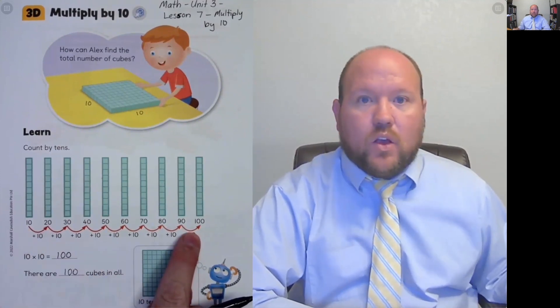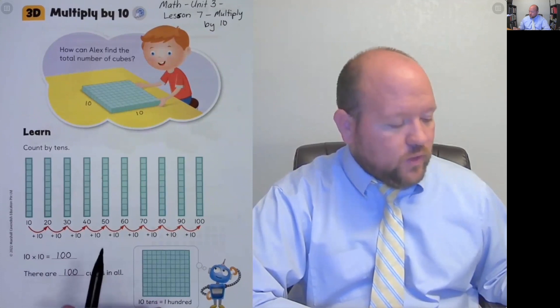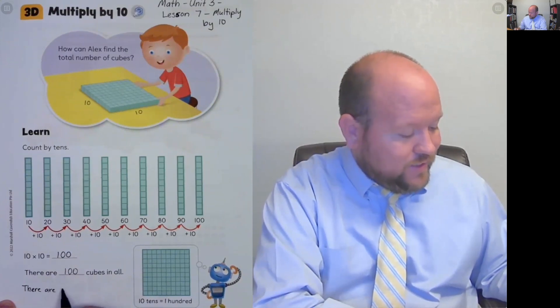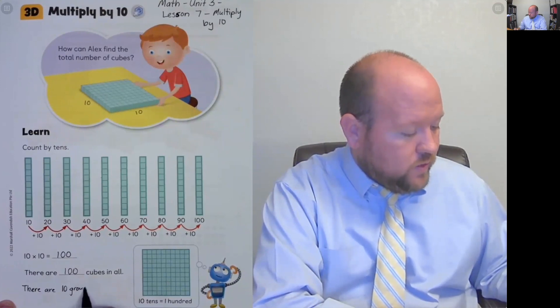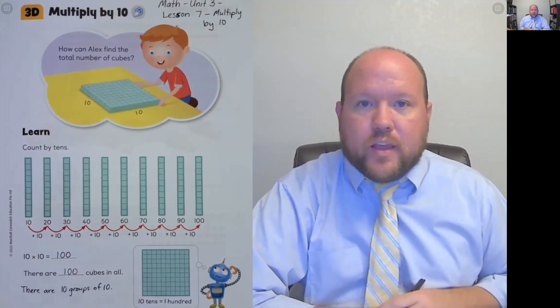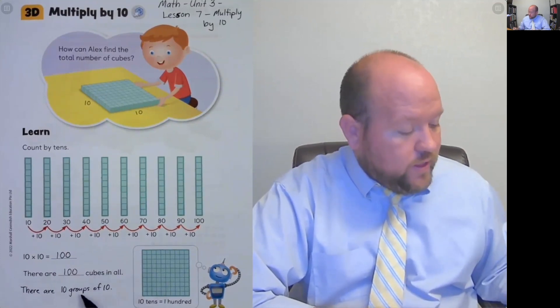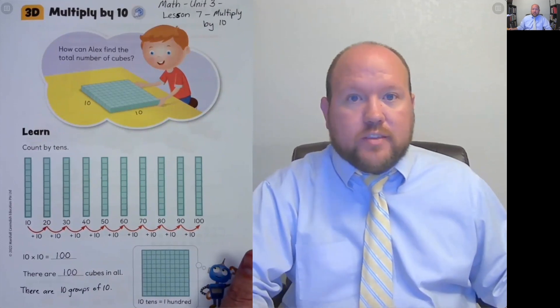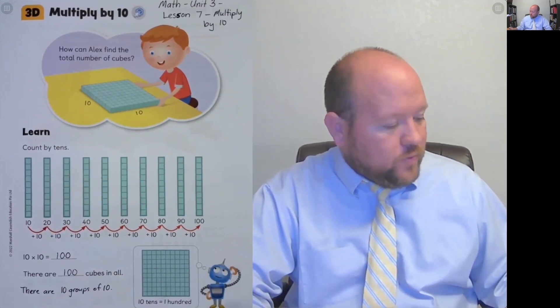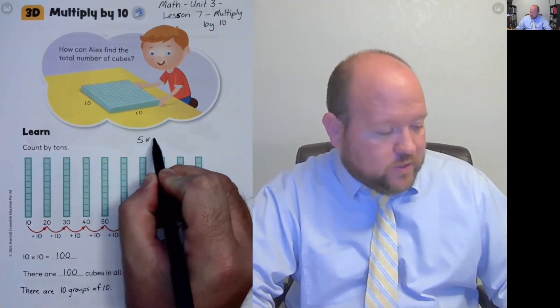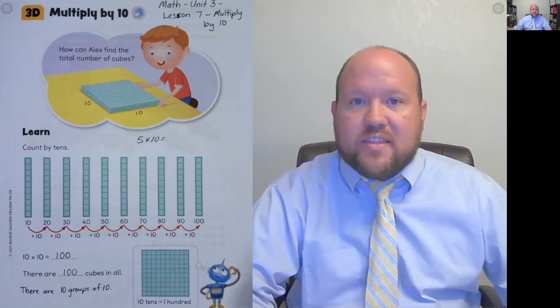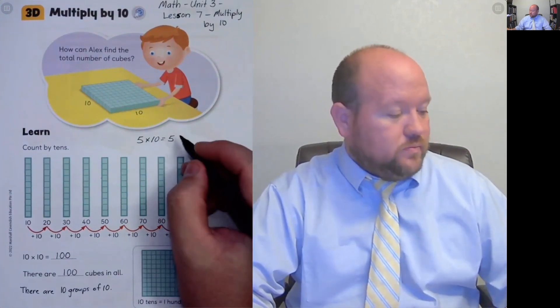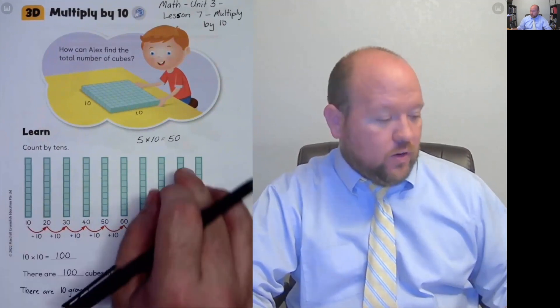So here we've used skip counting. We could have also used repeated addition. We could also think of there are 10 groups of 10. Now, one thing that teachers will often teach is that when you multiply by 10, you add a zero. Let's just do another problem. Let's do 5 times 10. One way we could think of this is that we're just going to put the 5 and add a zero. And there's nothing wrong with that. That is true here.